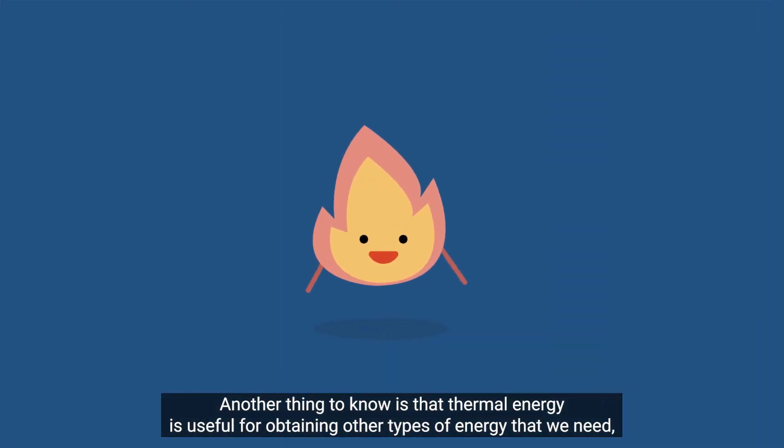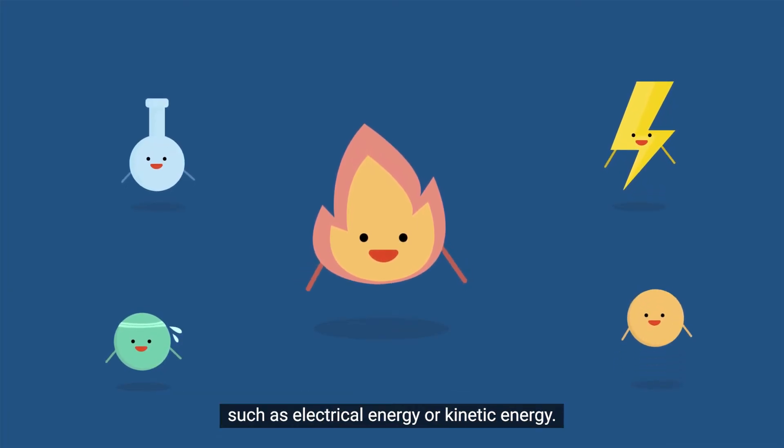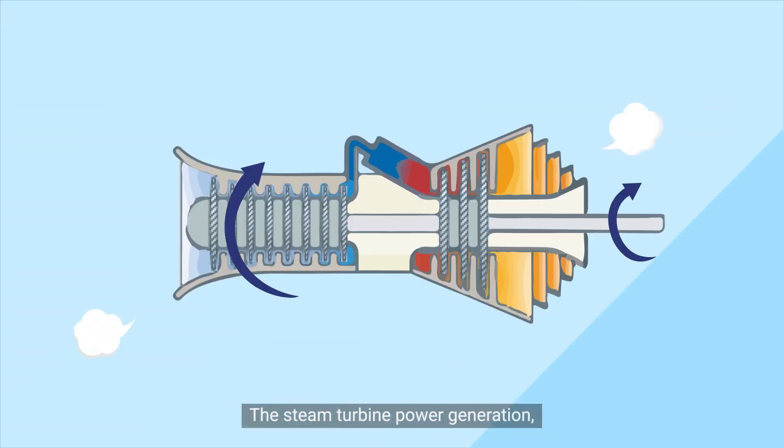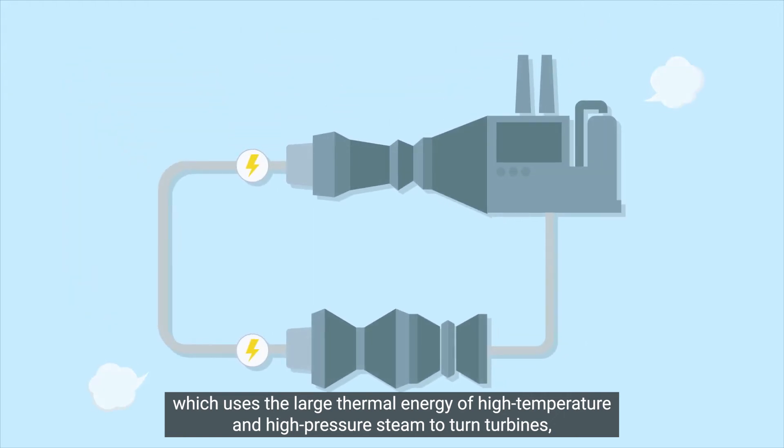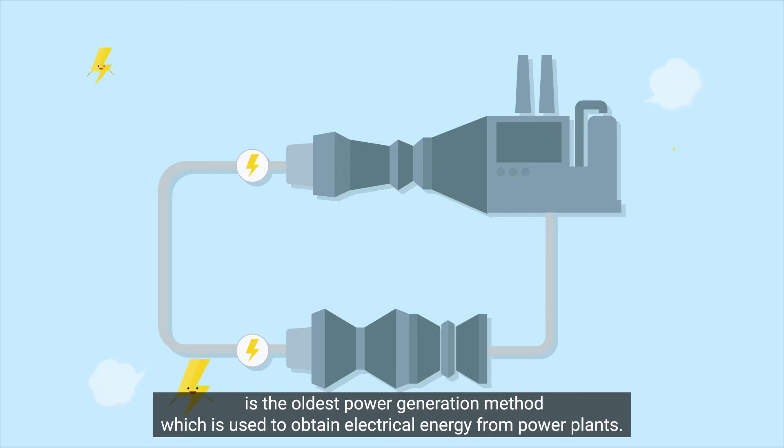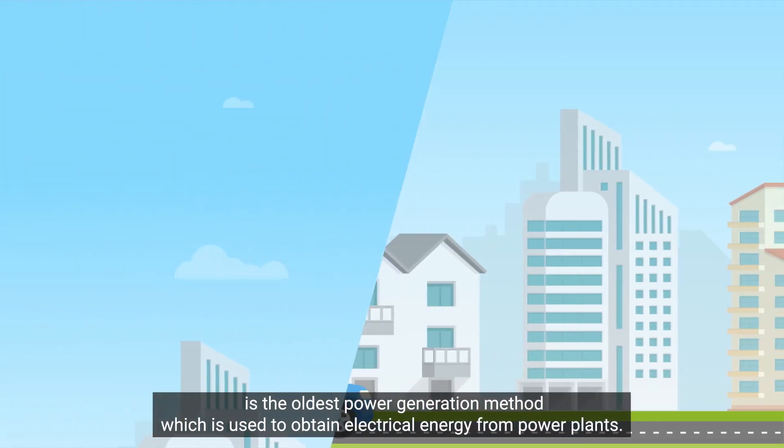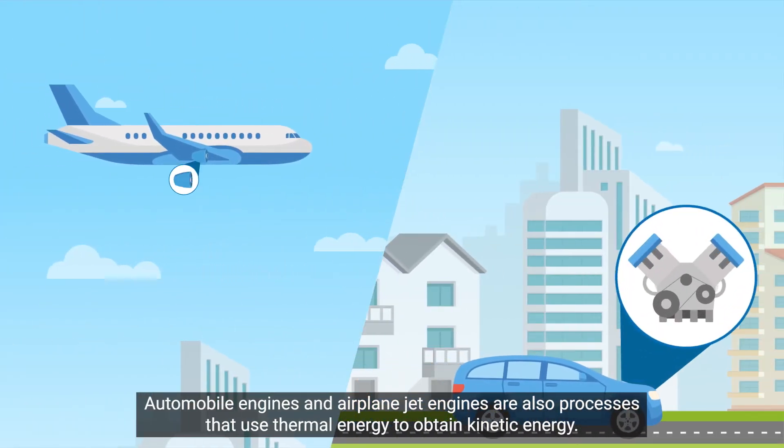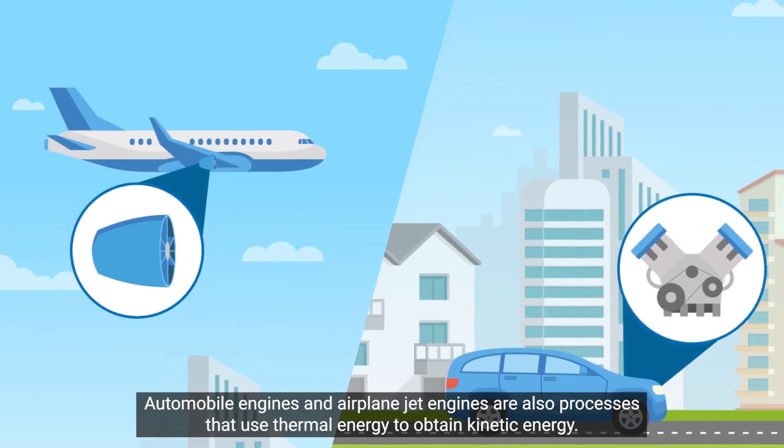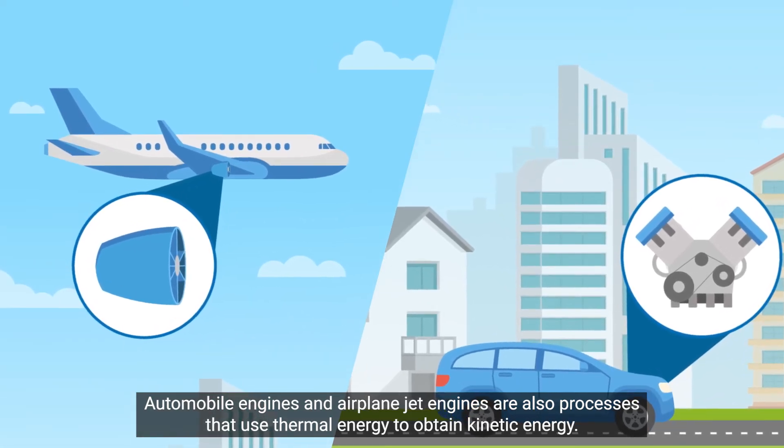Another thing to know is that thermal energy is used for obtaining other types of energy that we need, such as electrical energy or kinetic energy. The steam turbine power generation, which uses the large thermal energy of high temperature and high pressure steam to turn turbines, is the oldest power generation method, which is used to obtain electrical energy from power plants. Automobile engines and airplane jet engines are also processes that use thermal energy to obtain kinetic energy.